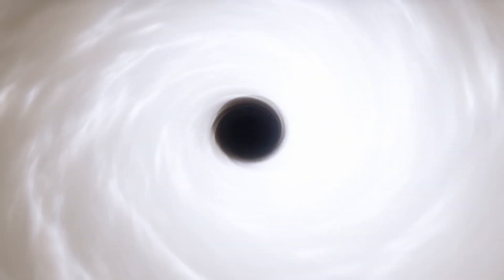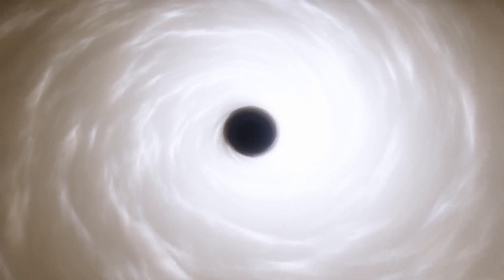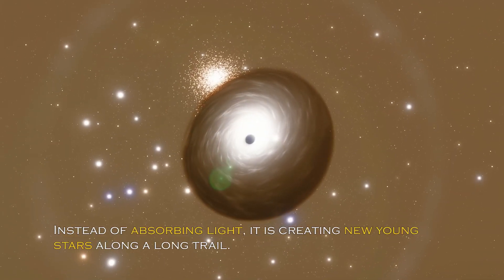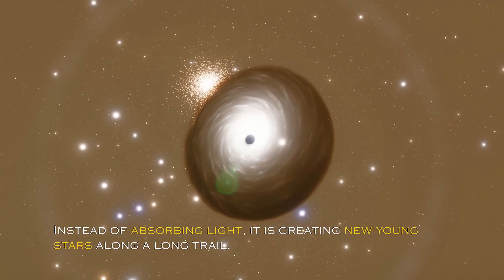Black holes are generally thought of as huge entities that pull everything including light towards them. But the recently observed black hole appears to be having the opposite effect. Instead of absorbing light, it is creating new young stars along a long trail.